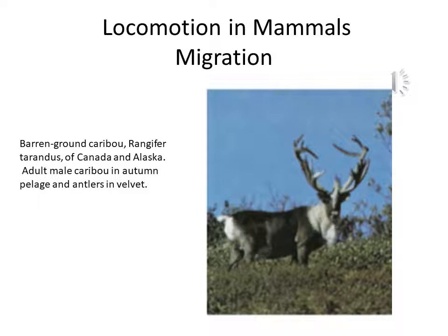From winter ranges in boreal forest (taiga), caribou migrate rapidly in late winter and spring to calving ranges on the barren-ground tundra. Calves are born in mid-June. As summer progresses, caribou are increasingly harassed by warble and nostril flies that bore into their flesh, by mosquitoes that drink their blood, and by wolves that prey on their calves. They move southward in July and August, feeding little along the way. In September, they reach the taiga and feed there almost continuously on low ground vegetation. Mating occurs in October.